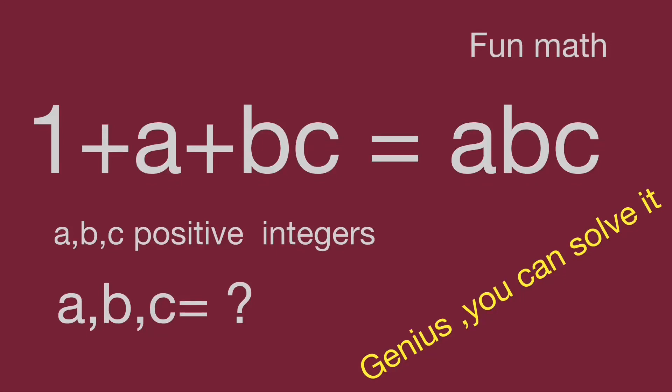Hello, you are watching Barahippo math genius videos. This is an interesting math question to find the numbers. While 1 plus a plus bc equals abc, and abc are positive integers, find the value for abc. Would you please try to find them? Pause the video and try it while you are ready. Keep watching the video to get the result.